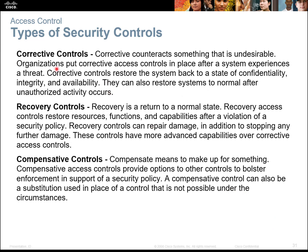Corrective controls address what you do if something happens — how do you correct it and make sure it doesn't happen again? Recovery controls address how you recover the information and get it back to a normal state. Compensative controls enforce security policies to make sure the incident will not happen again under any circumstance. These three things — what to do when it happens, how to prevent it, and how to keep it from happening — need to be written into your policies and procedures to cover anything that may occur.